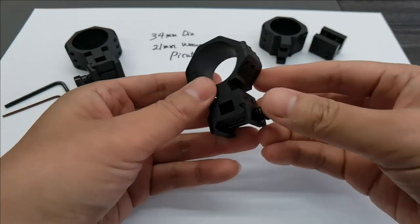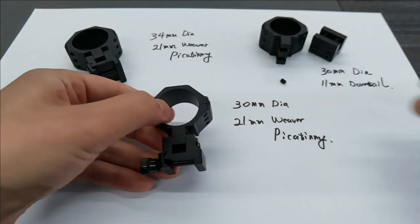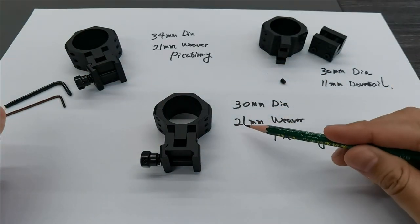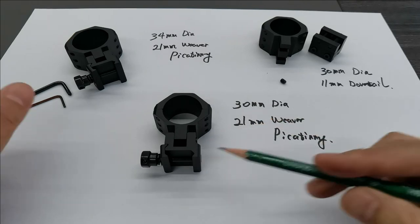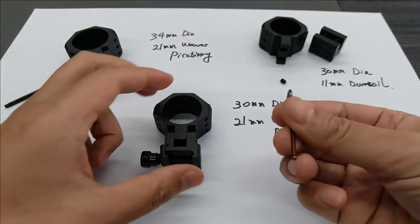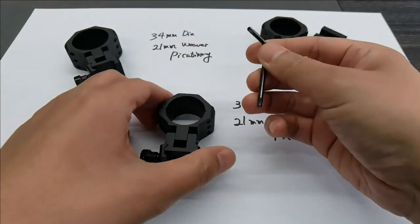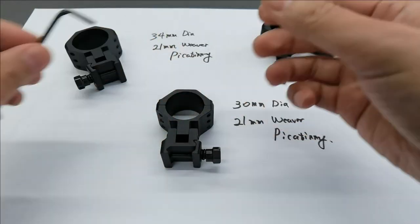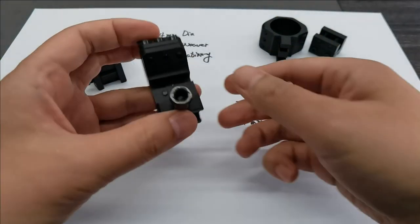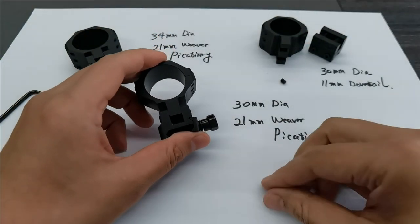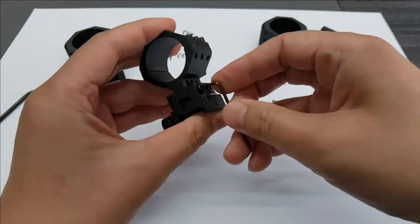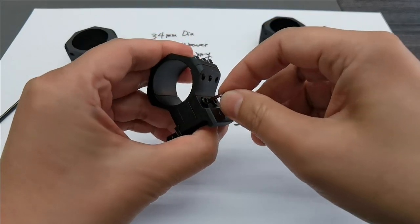What I want to introduce today is the 30mm with 21mm Weaver and Picatinny mount. We use the torx head to install the scope. But what I want to introduce is how this works and how to use it. When you have it, it will look like this.